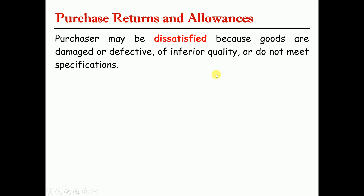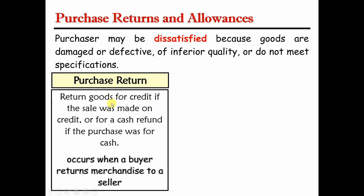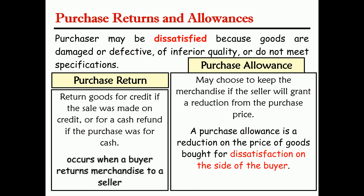Purchasing returns and allowances: sometimes the purchaser may be dissatisfied because goods are damaged, defective, of inferior quality, or do not meet specifications. If the sale was made on credit, the buyer may return the goods. Purchase return and allowance may occur when the seller guarantees a reduction from the purchase price. A purchase return occurs when the buyer returns merchandise to the seller. An allowance is a reduction in the price of goods bought due to buyer dissatisfaction.